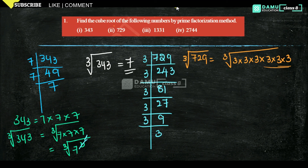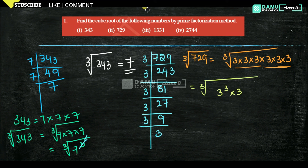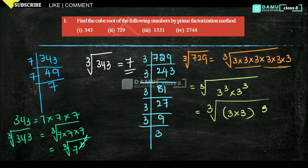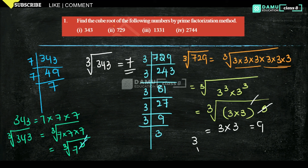We are getting two pairs with cube root. Cube root of 3³ × 3³ = cube root of (3 × 3) whole cube. The cube root and cube cancel, leaving 3 × 3 = 9. Therefore, cube root of 729 = 9.